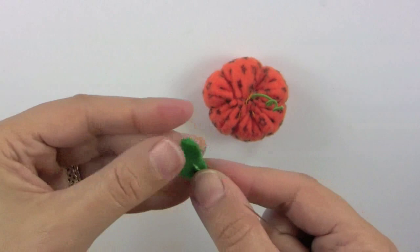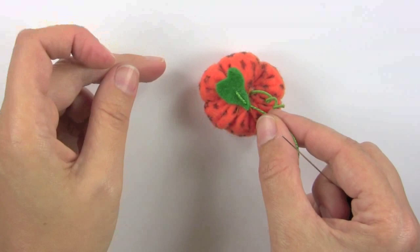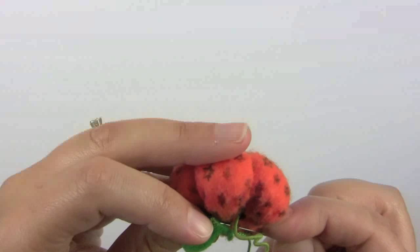I'm going to place it just on the pumpkin like this and then I'm just going to do a little stitch to tack it on here. I'm just going to go through one side and then kind of out the other side.